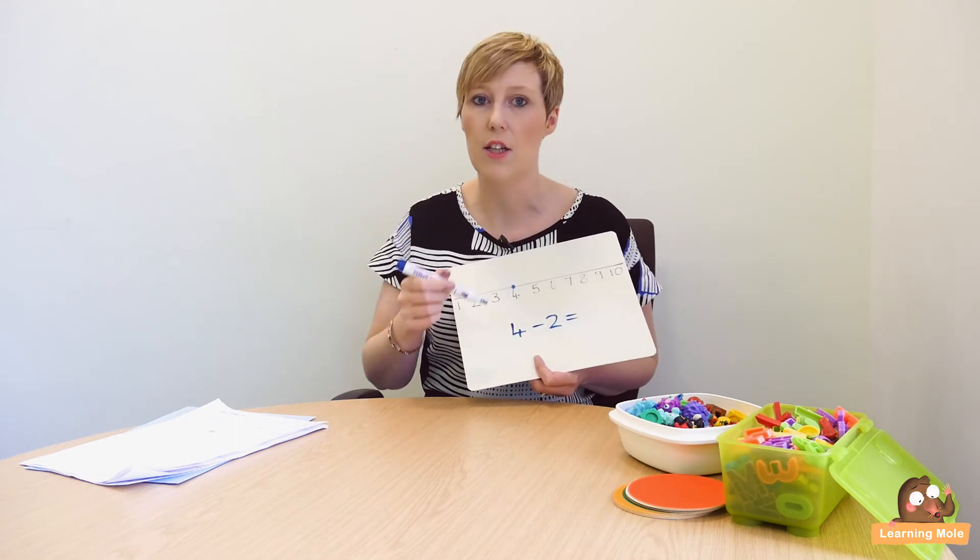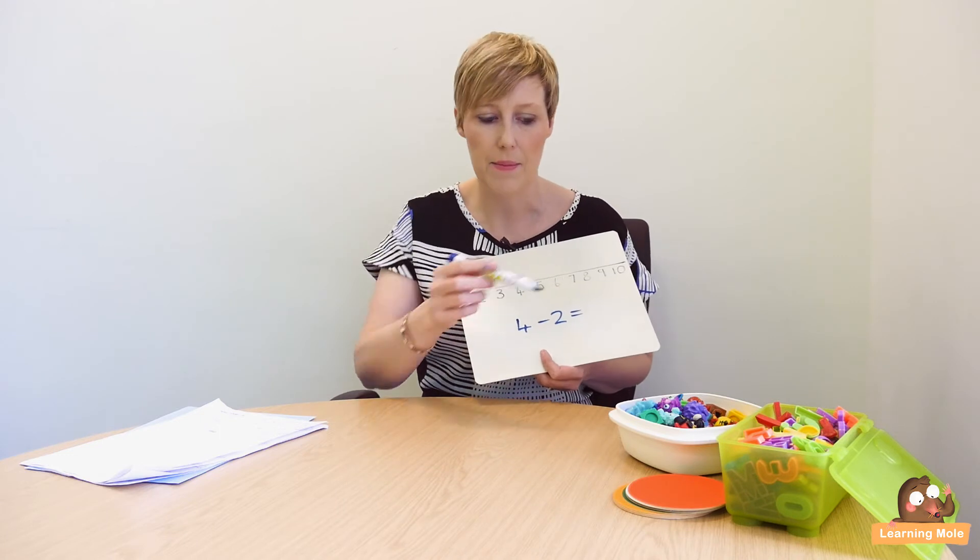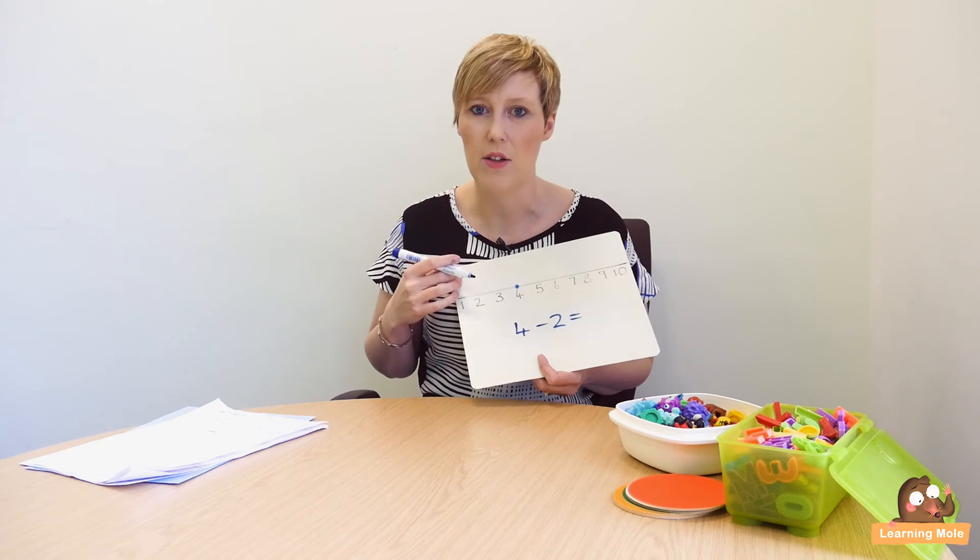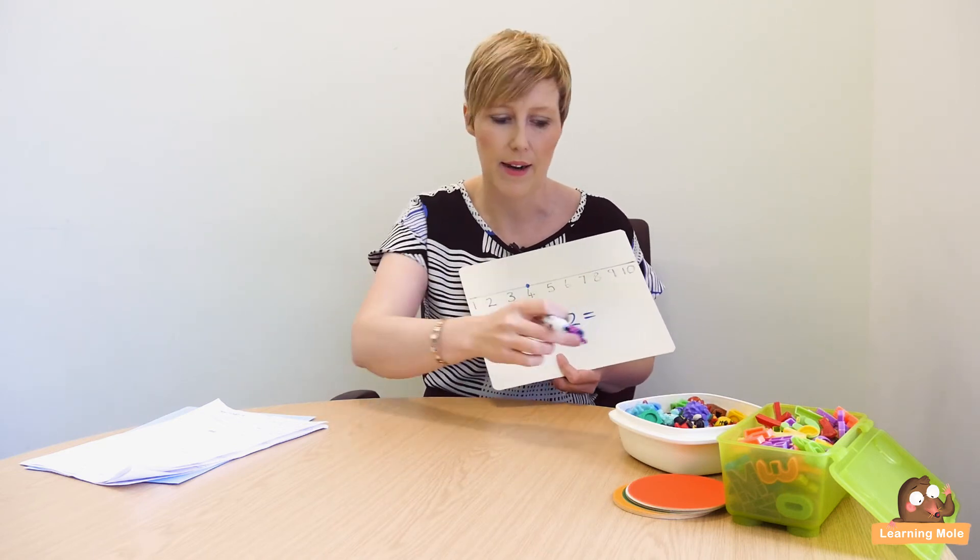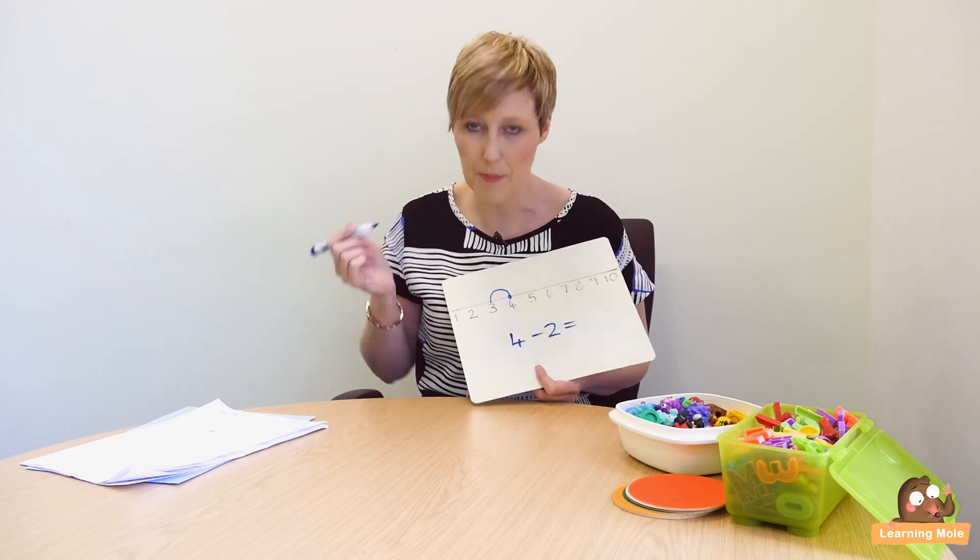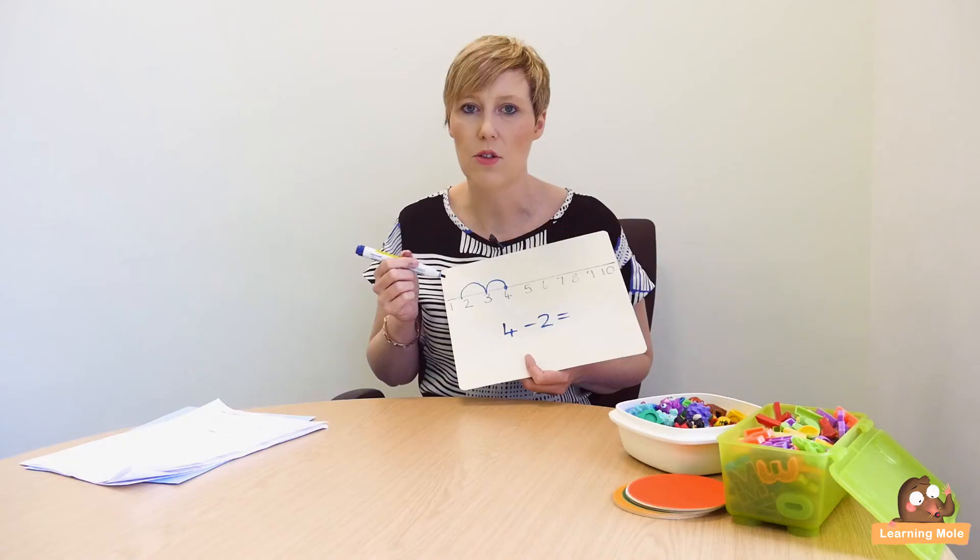If you want to use the whiteboard pen instead of physically showing those jumps, sometimes it's actually nice to draw the jumps and then get the little figure or whatever to do it, because they've actually got that visual there. Sometimes it's easy to make mistakes when they're busy jumping around with their little character—they become a bit obsessed with the character. So that's your one jump back to three and your two jumps back to two, and you land on two. So your answer is two.